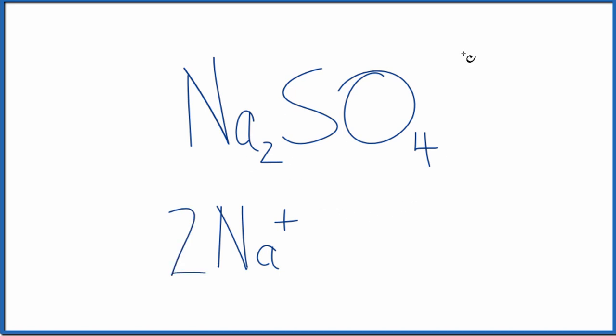So two sodium ions, and then this whole thing here, SO4. This is the sulfate ion. This is really an important ion in chemistry, and one you should memorize. SO4 is the sulfate ion, and the whole thing has a two minus ionic charge. So we have SO4 2-, that's the sulfate ion.